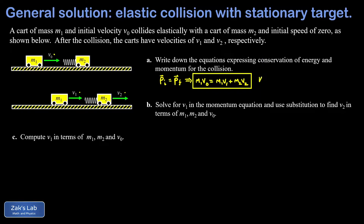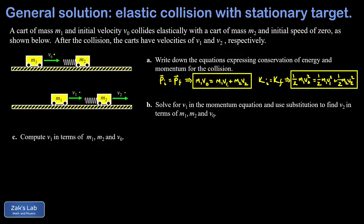For the kinetic energy equation: in an elastic collision the initial kinetic energy equals the final kinetic energy. Initial KE is one-half m1*v_naught-squared, and final KE is one-half m1*v1-squared plus one-half m2*v2-squared. This is a system of two equations and two unknowns. The known quantities are m1, m2, and v_naught; the goal is to express v1 and v2 in terms of those.